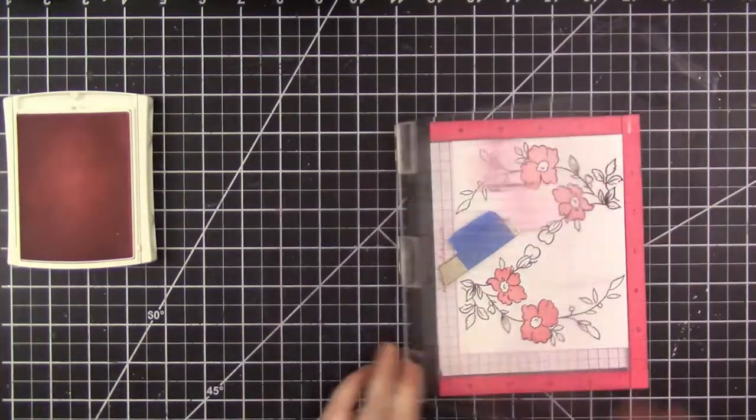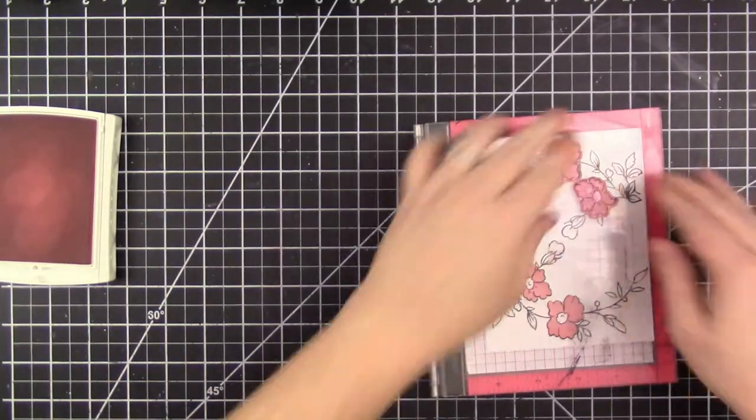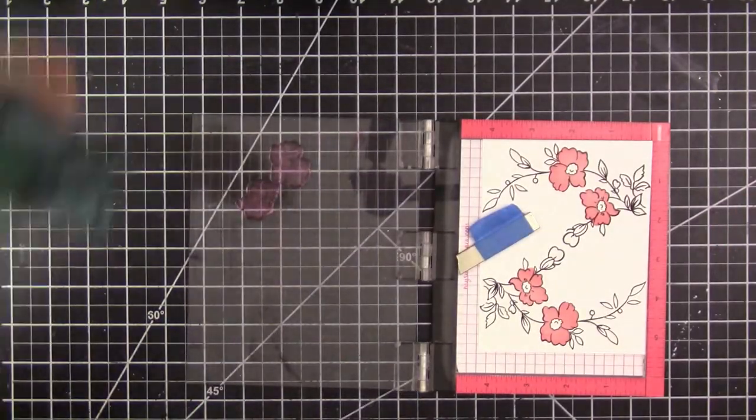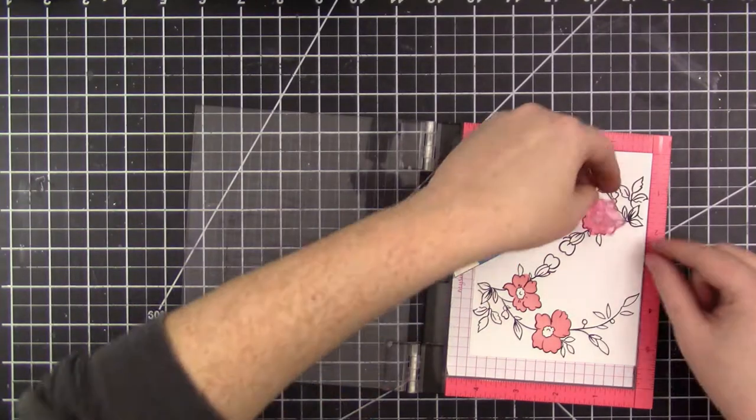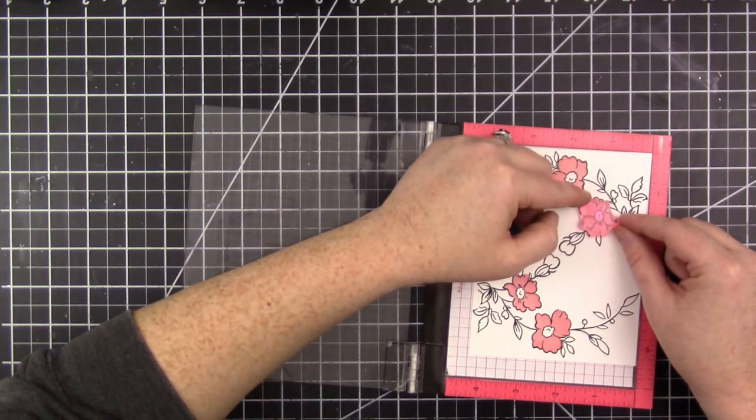This stamp set has three layers to color the florals. What I like to do is stamp the largest piece—the stamp that covers the most surface area of the flower—in my lightest color of ink. For this card I'm using a light pink color.